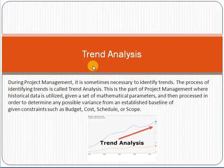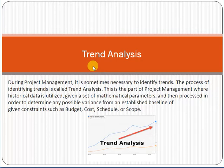So trend means that when people start following something, you say it is a trend. Now, in the context of project management, the general concept of trend analysis means that we analyze historical data — what happened four months ago, five months ago, or one year ago — and based on that historical data, we forecast what will happen in the next four or two months. That is called trend analysis.